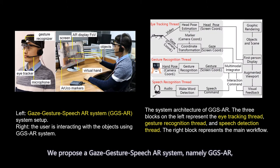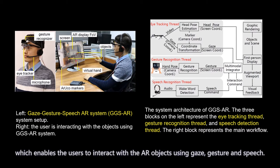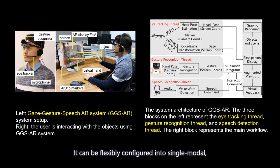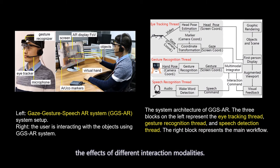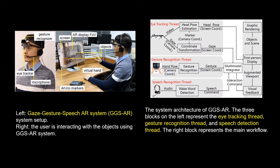We propose a gaze-gesture speech AR system, namely GGSAR, which enables users to interact with AR objects using gaze, gesture and speech. It can be flexibly configured into single-modal, double-modal, and triple-modal to investigate the effects of different interaction modalities. The system has three threads.